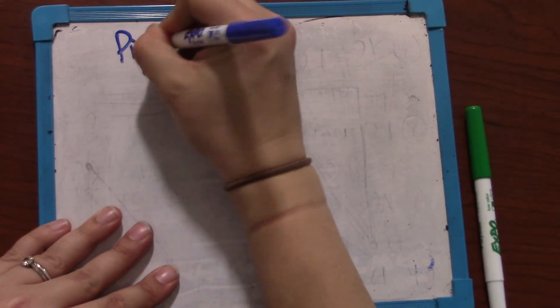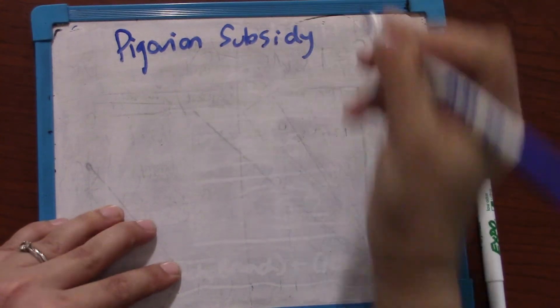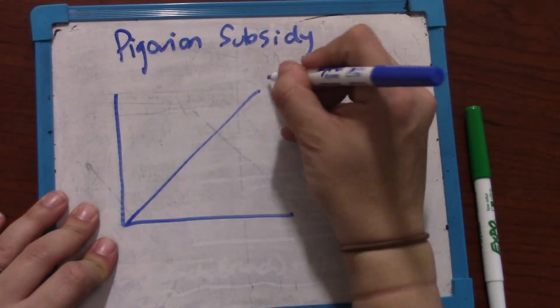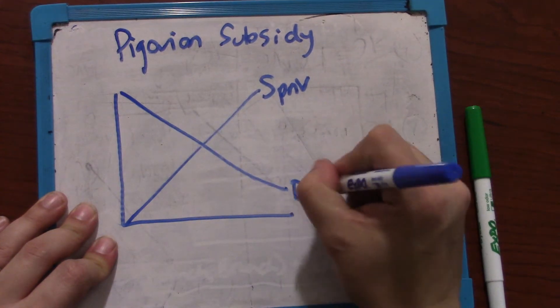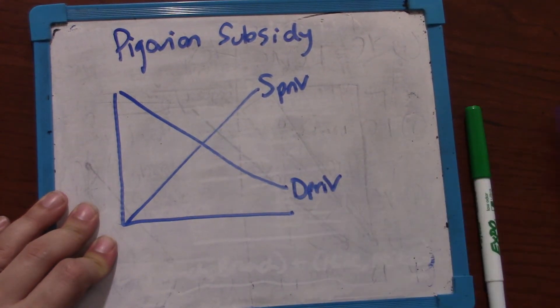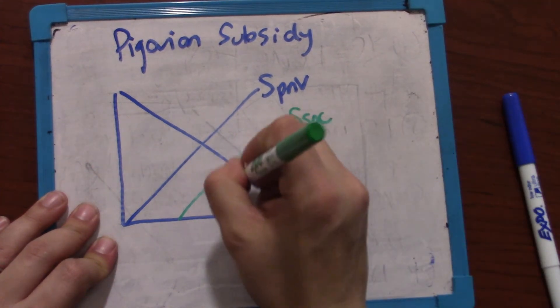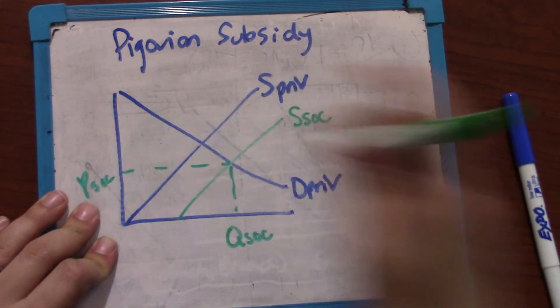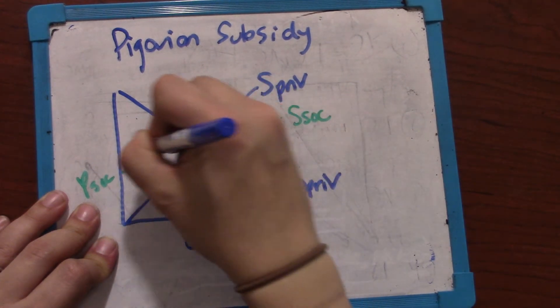So one way this might get corrected is with a Pigovian subsidy. So I'm just going to redraw our graph because in order to do a Pigovian subsidy we don't actually need all of those beautiful letters. So we have the private supply, the private demand, then the socially optimal supply and the socially optimal equilibrium compared to the market equilibrium.